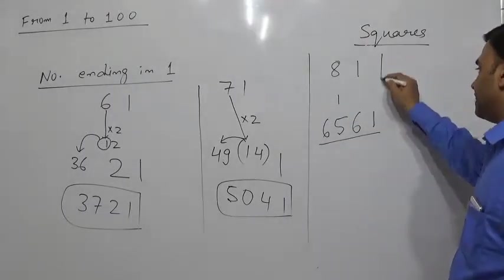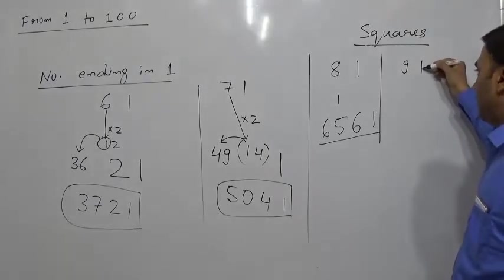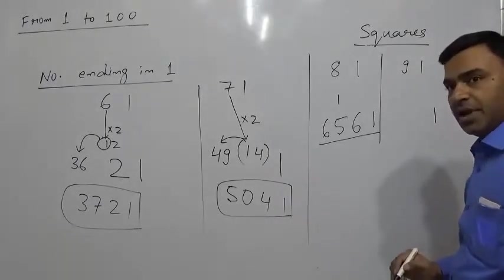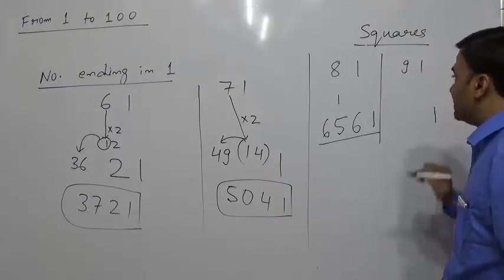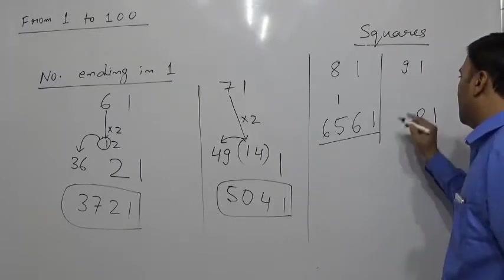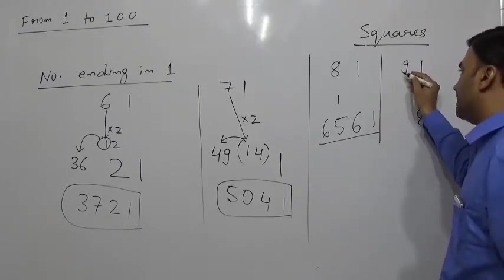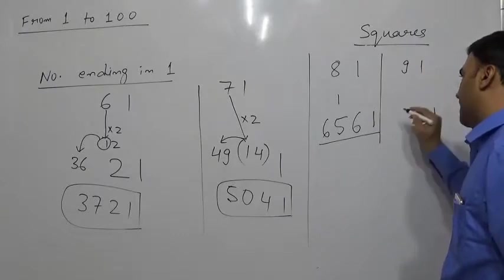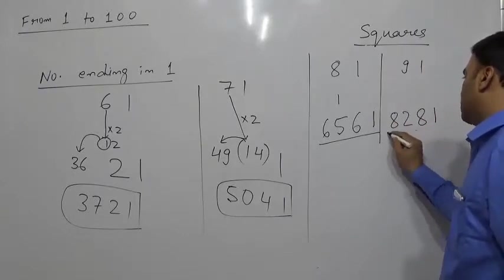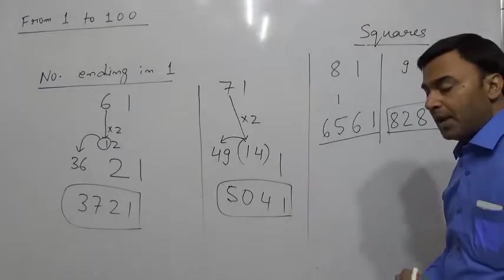Suppose we take the square of 91. For 1 we have 1 at the end; in the middle 9 × 2 = 18, so 8 comes here and 1 carries forward to 9² = 81, giving 81 + 1 = 82. The square of 91 is 8281.